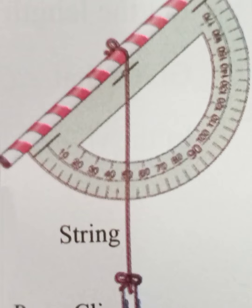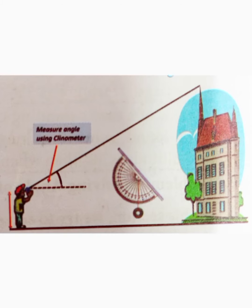Make sure that the string hangs freely to create a vertical line or plumb line. Find an object outside that is too tall to measure directly, such as a basketball hoop, a flagpole, or the school building.